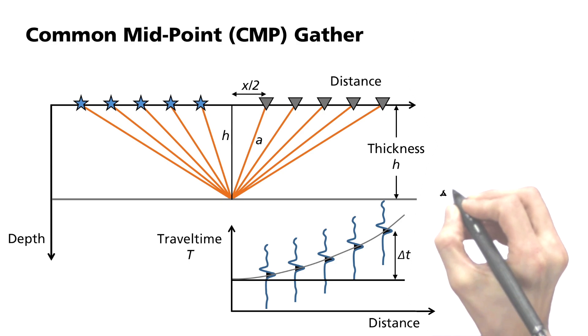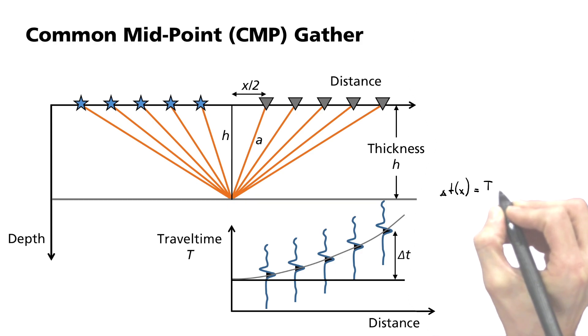travel time t of x minus travel time of the perpendicular t0, which is equal to the square root of x divided by v0 squared plus t0 squared minus t0.